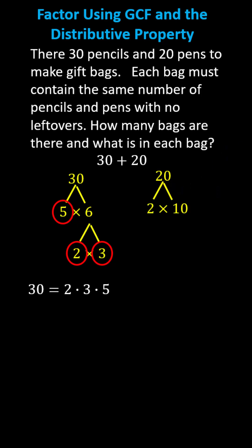For 20, let's start with 2 times 10, where 2 is prime. 10 equals 2 times 5, both 2 and 5 are prime. The prime factorization of 20 is 2 times 2 times 5.